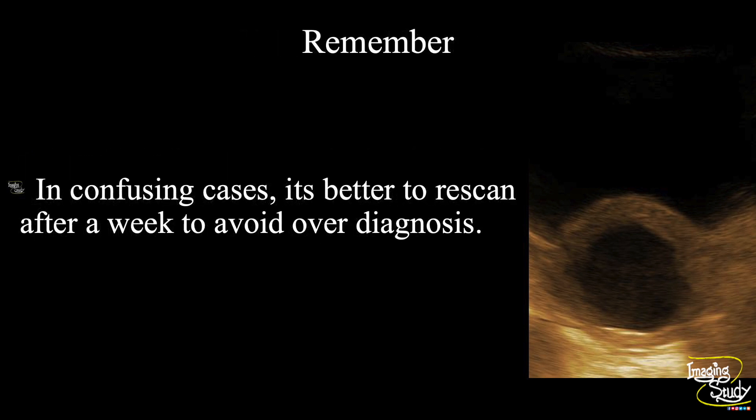The take-home message: usually in transabdominal ultrasound, if you don't see any embryo after more than 25 millimeter mean sac diameter, then it will be counted as a blighted ovum. In confusing cases, it's better to re-scan after a week to avoid over-diagnosis.